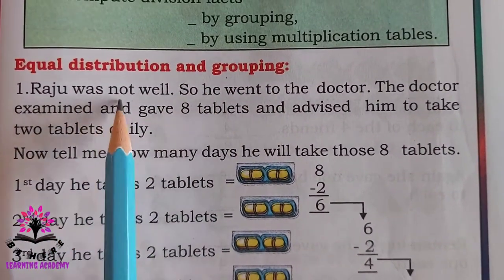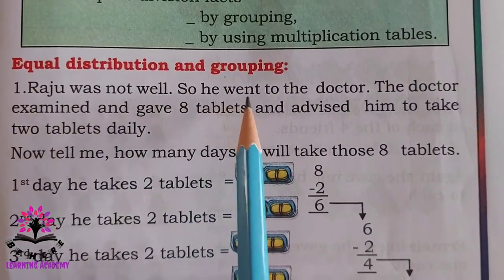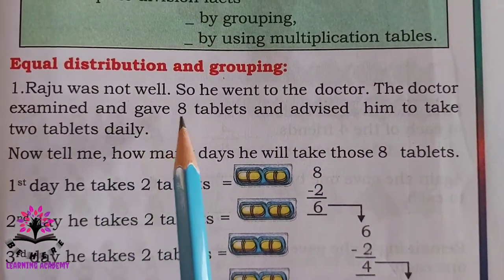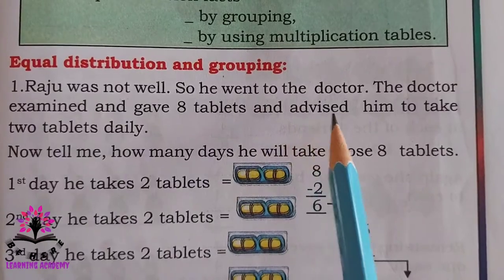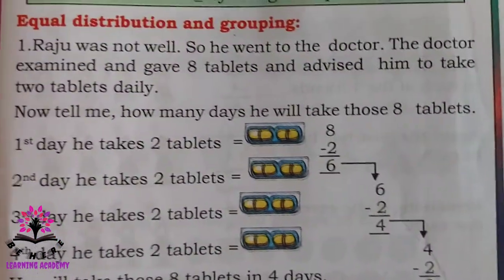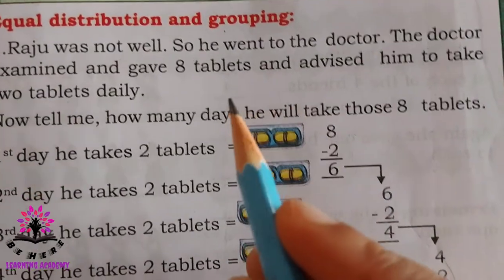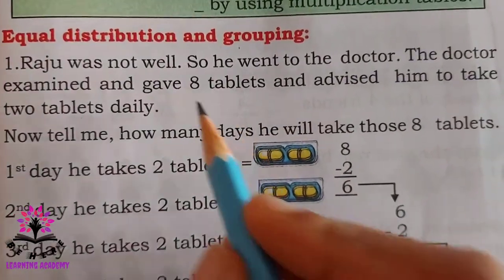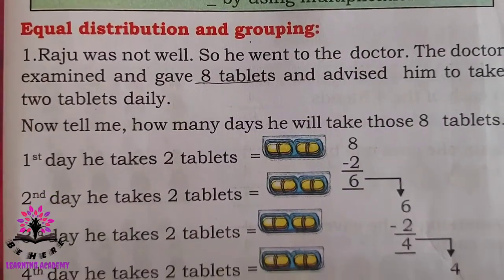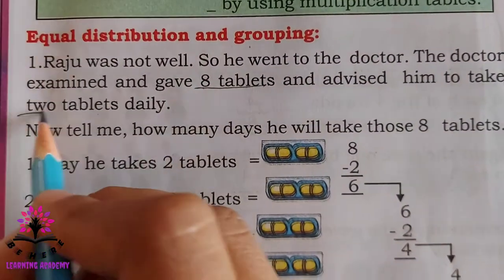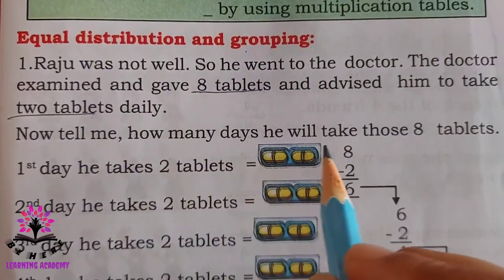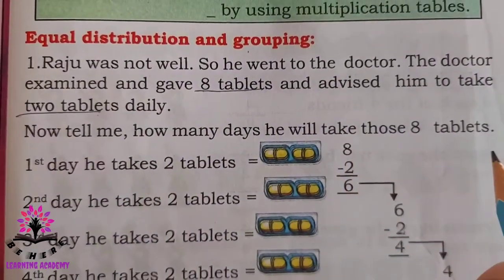Raju was not well, so he went to the doctor. The doctor examined him and gave eight tablets, advising him to take two tablets daily. Now you have to tell me how many days he will take those eight tablets.